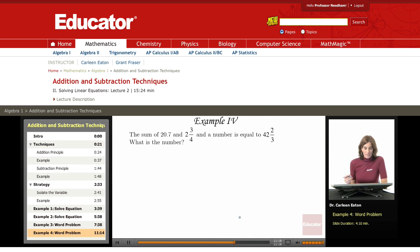Here's another example in which we're given a sentence, but we also have some numbers, and it looks a little messy because we have both decimals and mixed numbers. So let's read through this. The sum of 20.7 and 2 3/4ths and a number is equal to 42 2/3rds. What is the number?